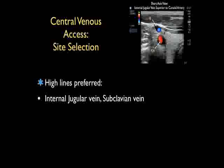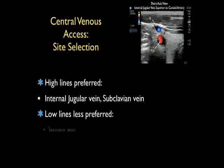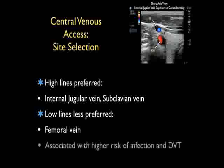In general, high lines are preferred. The internal jugular vein and subclavian vein are associated with a decreased risk of infectious complications. In general, low lines are less preferred, as placement of a catheter into the femoral vein is associated with a higher risk of infection and also a higher risk of DVT in our patients.